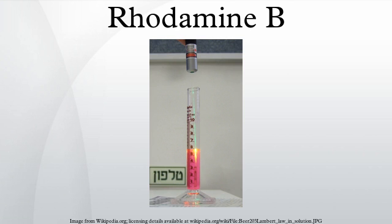In California, Rhodamine B is suspected to be carcinogenic and thus products containing it must contain a warning on its label. In New Jersey, MSDS files state that there is limited evidence of carcinogenicity in laboratory animals, and no evidence at all in humans.